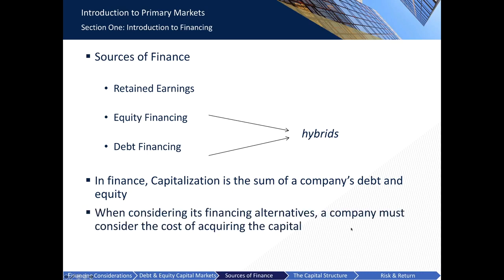When considering its financing alternatives, a company must consider the cost of obtaining capital. With debt, this is the interest expense a company pays on its borrowings. With equity, the cost of capital refers to the claim on earnings provided to shareholders for their ownership stake. Provided a company is expected to perform well, debt financing can usually be obtained at a lower effective cost. Debt is also tax deductible — never forget how important this is. If tax rates are high, using debt finance is generally more attractive.